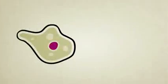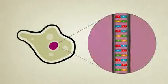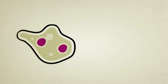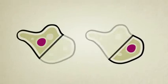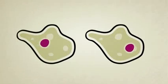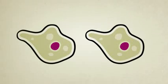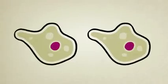Single-celled amoebas and other simple creatures reproduce by copying their DNA inside their guts, moving both copies to either side of their body, splitting in two right down the middle, and then growing back to full size. If all goes well, the two new amoebas will be exact copies of each other, but in nature, things aren't always perfect.